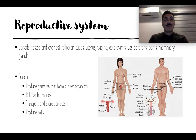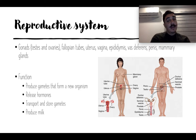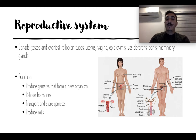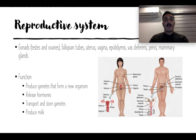The last system is the reproductive system. We've got gonads, fallopian tubes, the uterus, vagina, epididymis, vas deferens, penis, and mammary glands. It mainly produces gametes to make a new organism — to reproduce. It also releases hormones, transports and stores gametes, and produces milk.